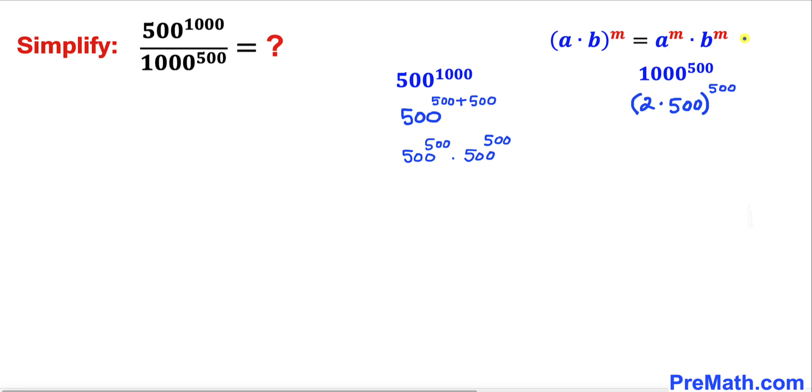And now we are going to apply this basic rule of exponents. So according to this rule, this could be written as 2 to the power 500 and then times 500 to the power 500.